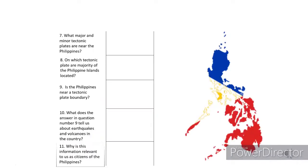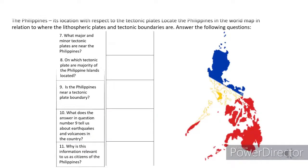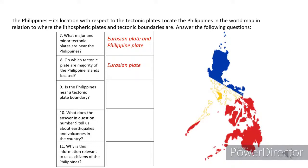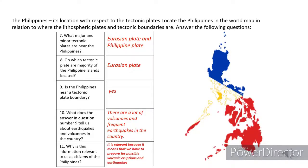Number seven: Eurasian plate and Philippine plate. Number eight: Eurasian plate. Number nine: yes. Number ten: there are a lot of volcanoes and frequent earthquakes in the country. Number eleven: it is relevant because it means that we have to prepare for possible volcanic eruptions and earthquakes.